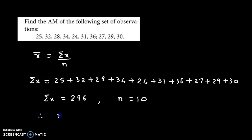So therefore, we obtain the arithmetic mean, that is x̄, as 296 divided by 10. So the final value is 29.6.